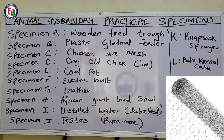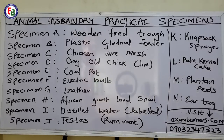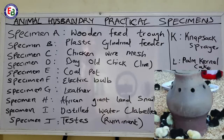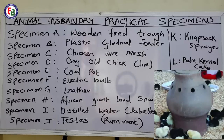The next specimen is Specimen E: coal pot. I am skipping Specimen D (day-old chick) briefly. For the day-old chick, they can ask you the adaptive features — for example, the function of feathers on the chick. A day-old chick has scanty feathers. Those feathers are used to regulate its body temperature, beautify the chicken, and protect the chicken — the chicken uses feathers for defense. They also use feathers to fly if it is a bigger bird.